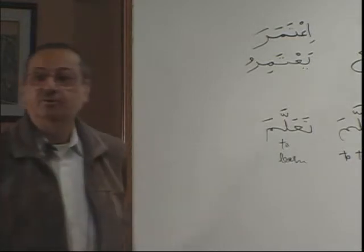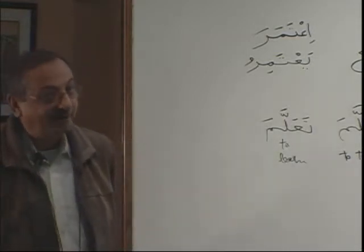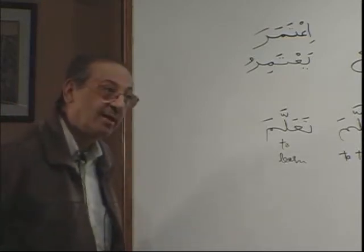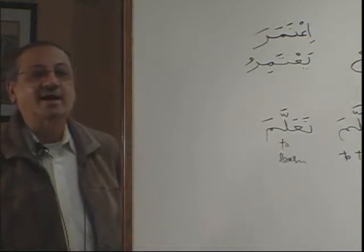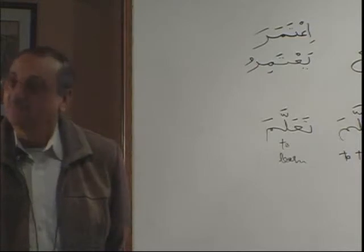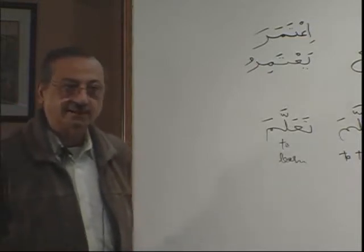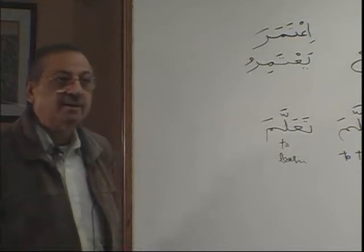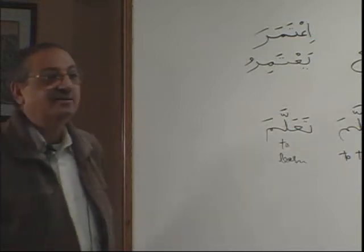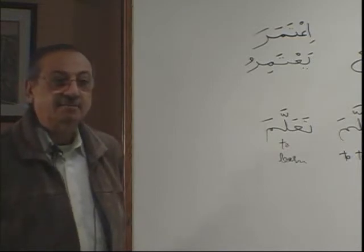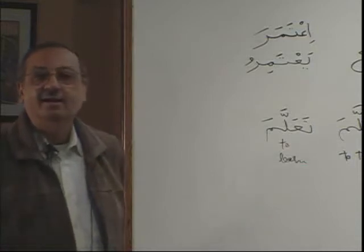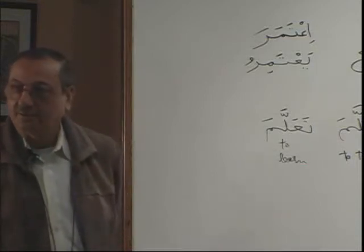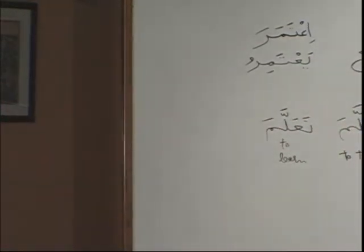Mudari'a conjugation: Yatamiru, yatamirani, yatamiruna, tatamiru, tatamirani. For antum hunna: yatamirna. Anta tatamiru, tatamirani, tatamiruna. Anti tatamirina, tatamirani. Antunna tatamirna. Ana atamiru. Nahnu natamiru. Very clear. I wrote it down because it is coming in the lesson.